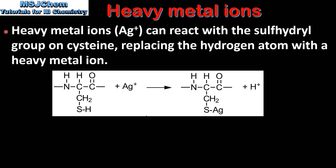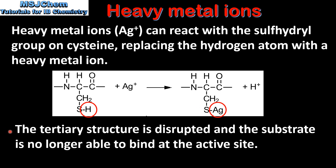Finally, we look at the effect of heavy metal ions on the activity of an enzyme. Heavy metal ions such as the silver ion can react with a sulfhydryl group on cysteine, replacing the hydrogen atom with a heavy metal ion. Here we can see that the hydrogen atom has been replaced by the silver ion in the sulfhydryl group. The tertiary structure is disrupted and the substrate is no longer able to bind at the active site.